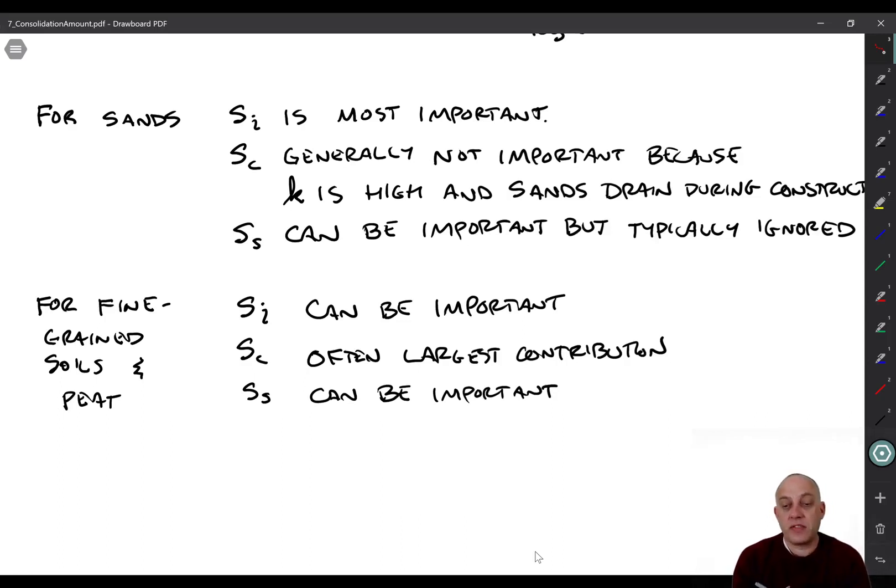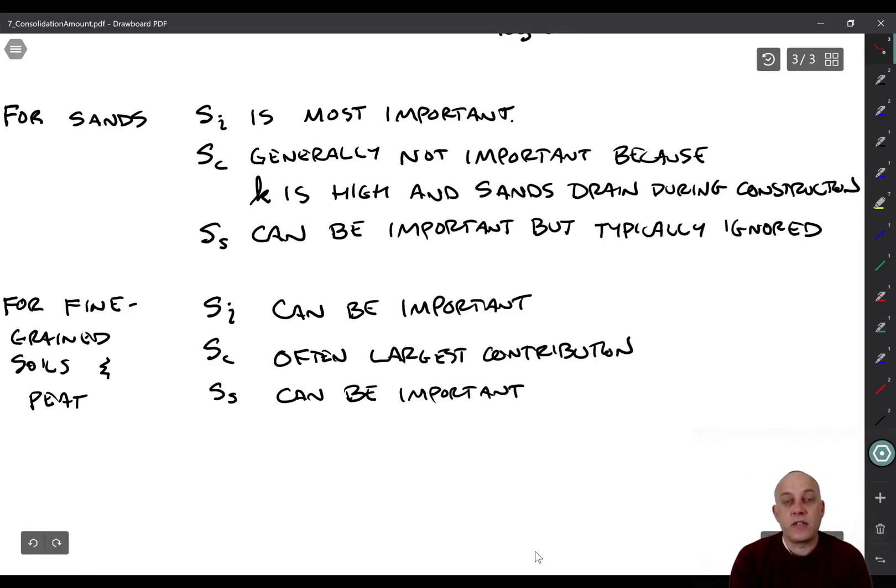Secondary compression can be important for sands, but it's typically ignored. So over time, we know the sand will continue settling and there are some methods for accounting for that. And then other sources of settlement for sands might be earthquakes. If you have strong earthquakes, sand will tend to settle. Other sources of vibration, machine vibrations, railroads, things like that can vibrate the sand and cause it to settle slowly over time.